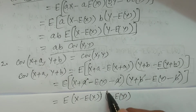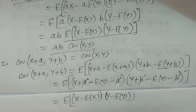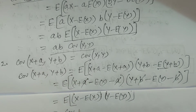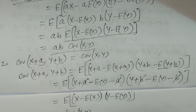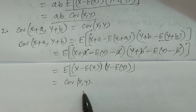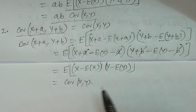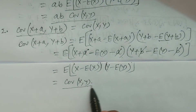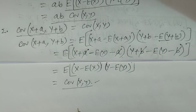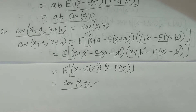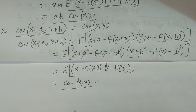Hence, it is equivalent to expectation of (x minus expectation of x)(y minus expectation of y), which is covariance of x, y. Therefore, covariance of (x plus a, y plus b) equals covariance of x, y. The constants a, b are not affected. This is called shifting the origin — if you add or subtract a quantity, the covariance is unchanged.